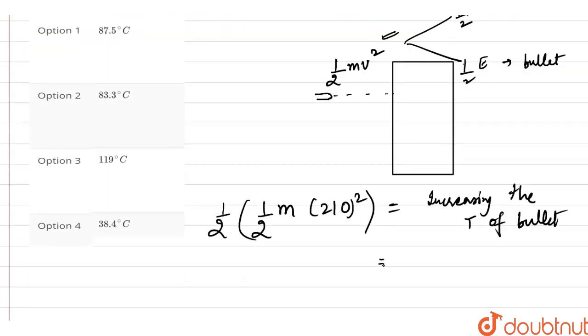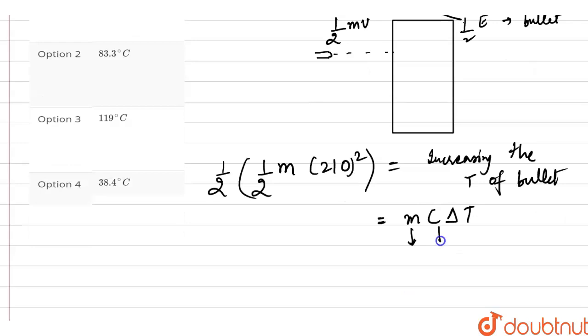Now the bullet being a solid, we know that the amount of heat given to the solid is equal to mc delta T where m is mass of the material, here it is mass of the bullet, c is the specific heat of the bullet and delta T is the temperature rise.